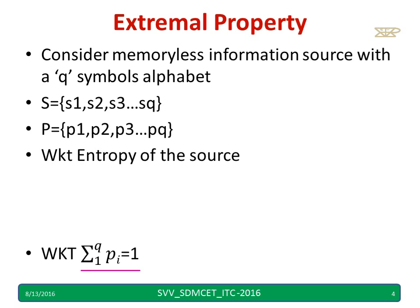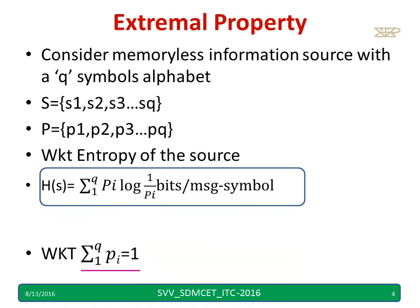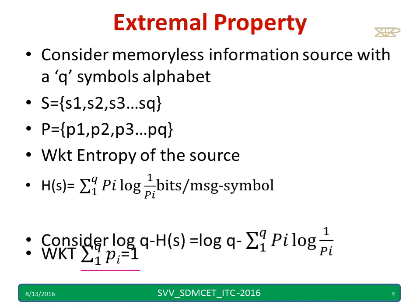When I have sq symbols, automatically I will be having pq probabilities. Those probabilities are respectively p1, p2 up to pq. We know that entropy of the source is given by H of s, summation pi log 1 by pi bits per message symbol.